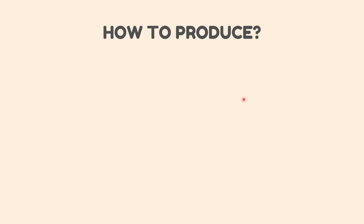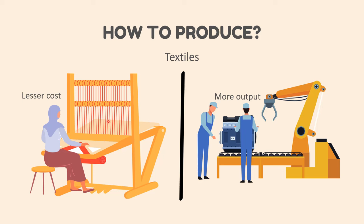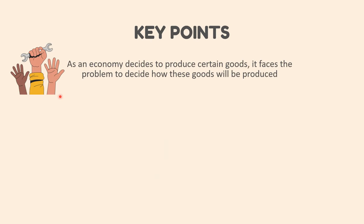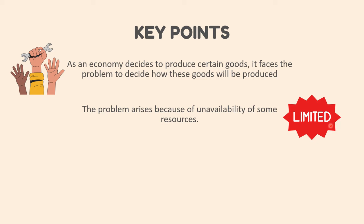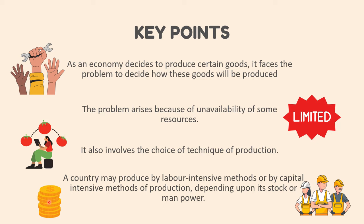For example, the production of textiles can be done either by hand loom or machine-based methods. The method which gives more output with lesser cost is chosen. In a country like India, where there is an abundance of labor, hand loom can be chosen, whereas in countries like the USA where labor cost is high, machine-based production is preferred. The key points are: as an economy decides to produce certain goods, it faces the problem of deciding how these goods will be produced. The problem arises because of unavailability of some resources, and it involves the choice of technique — a country may produce by labor-intensive or capital-intensive methods depending upon its stock of manpower.